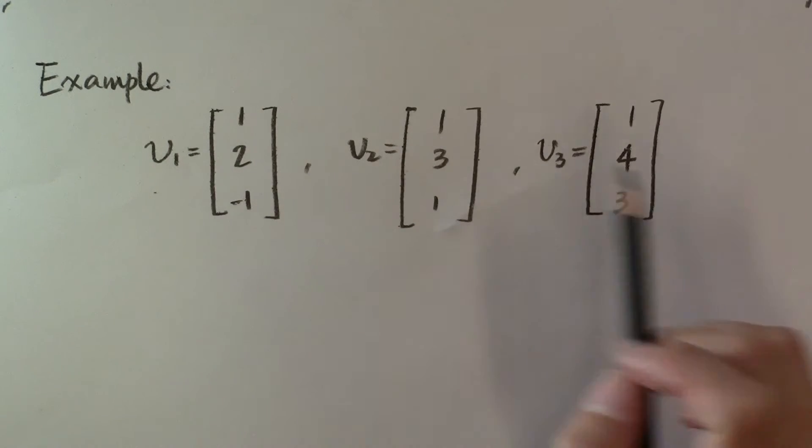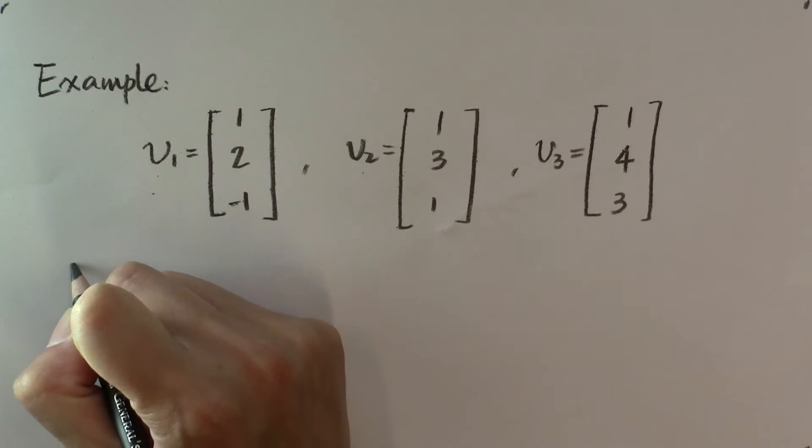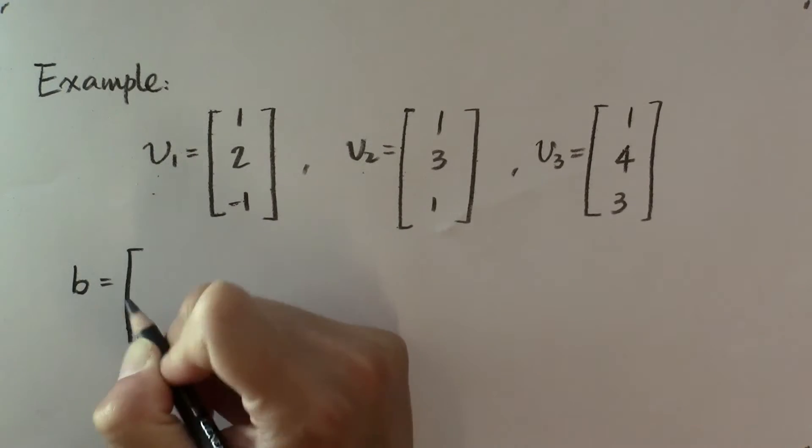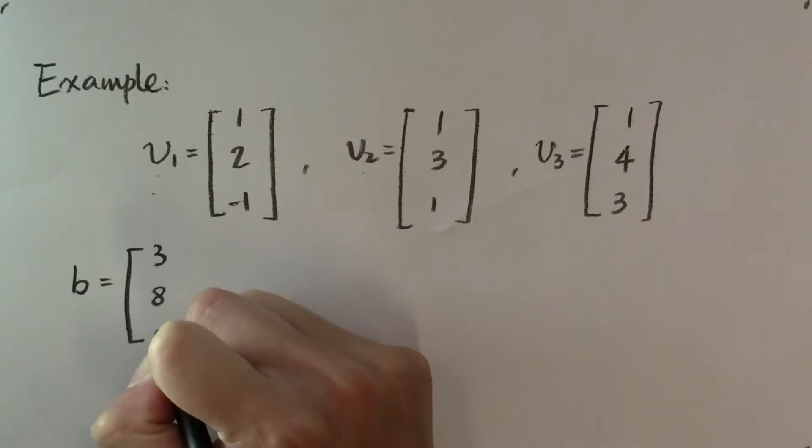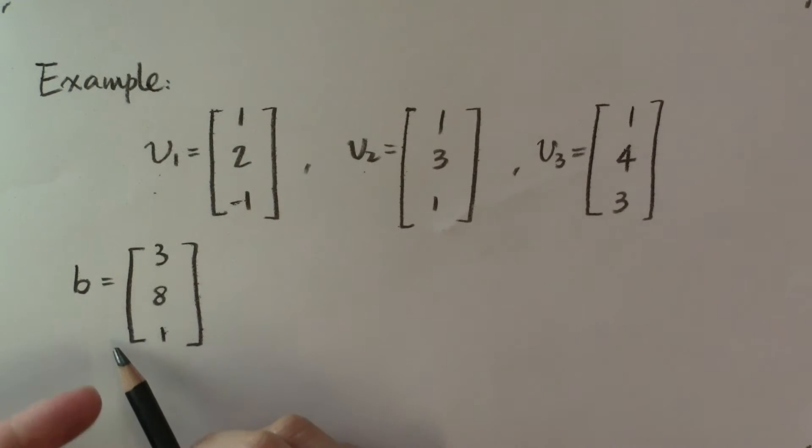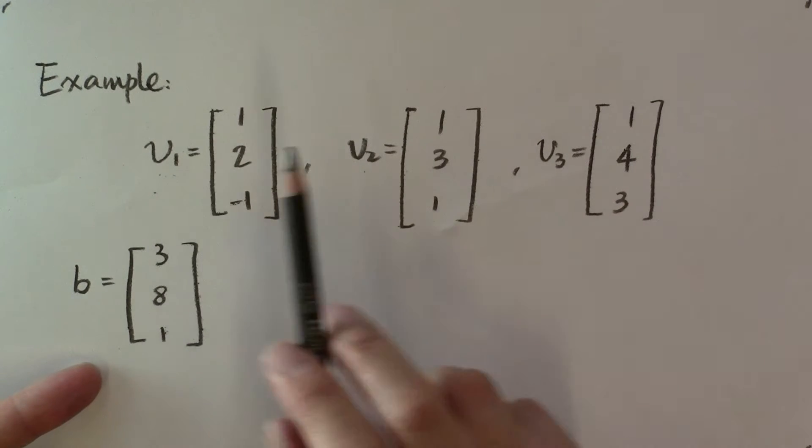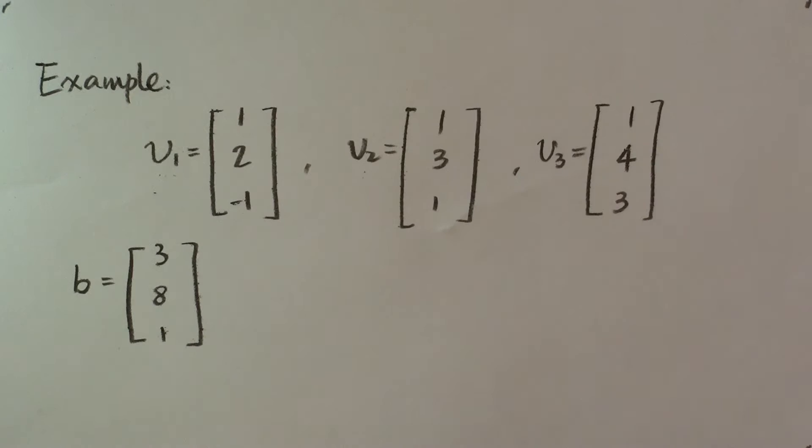So now, if I have three vectors v₁, v₂, v₃, and I have a vector b equal to [3, 8, 1], tell me if b is a linear combination of v₁, v₂, and v₃.